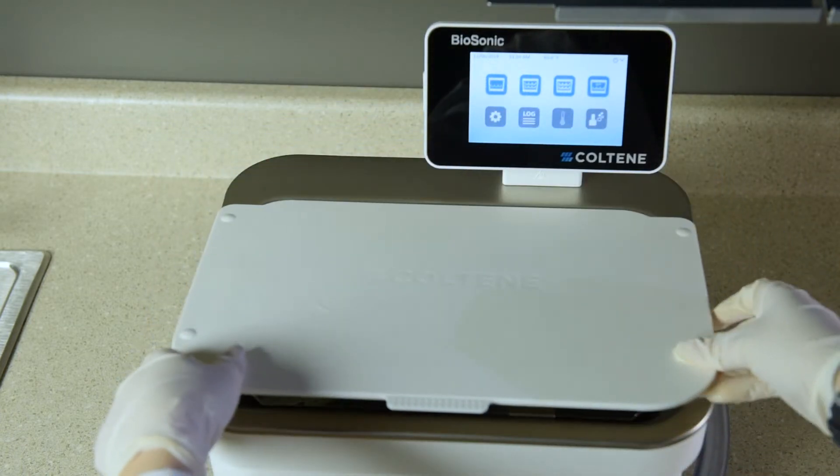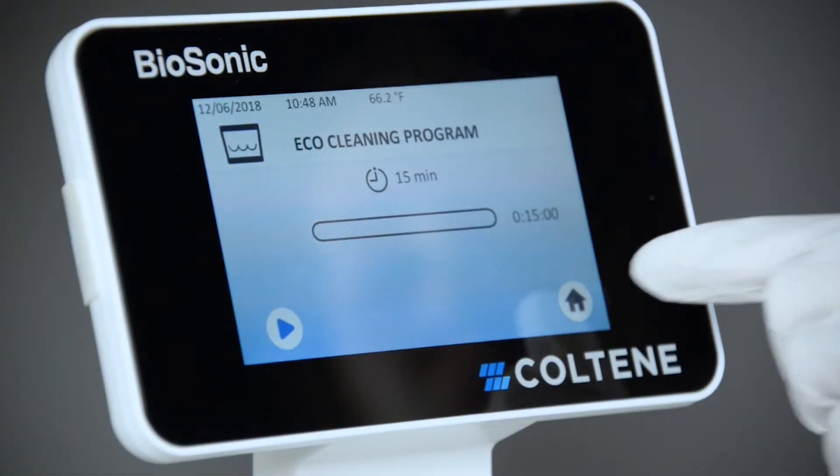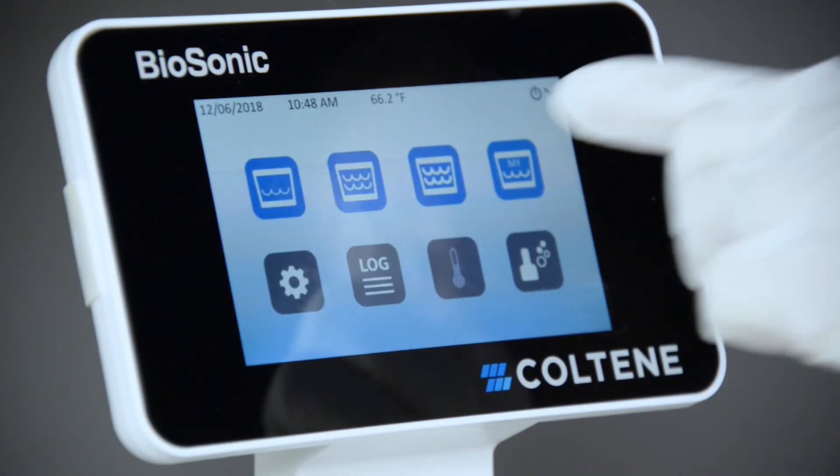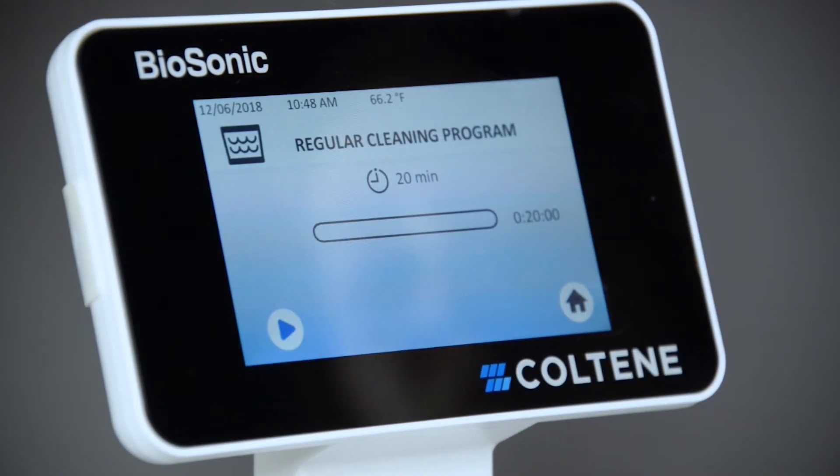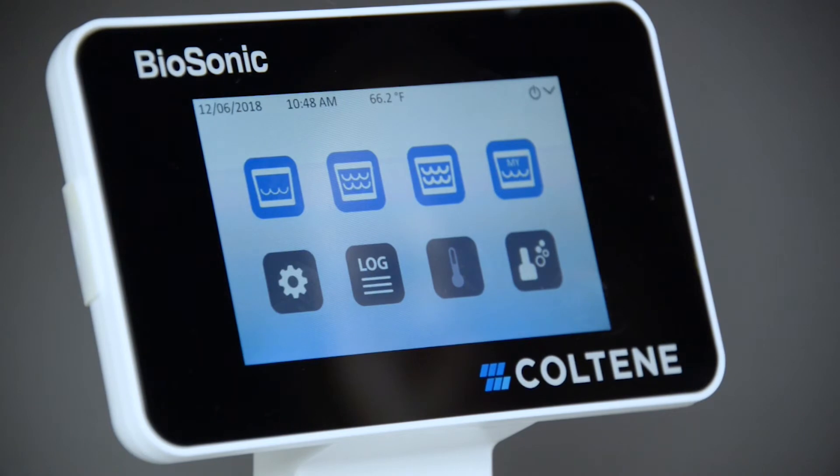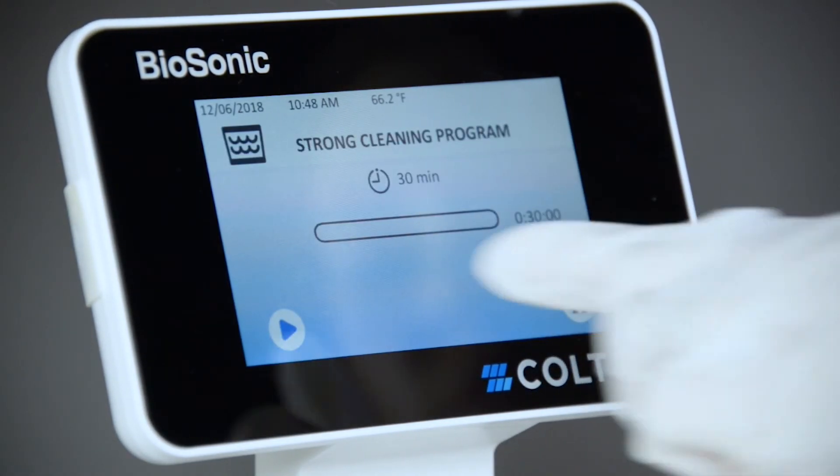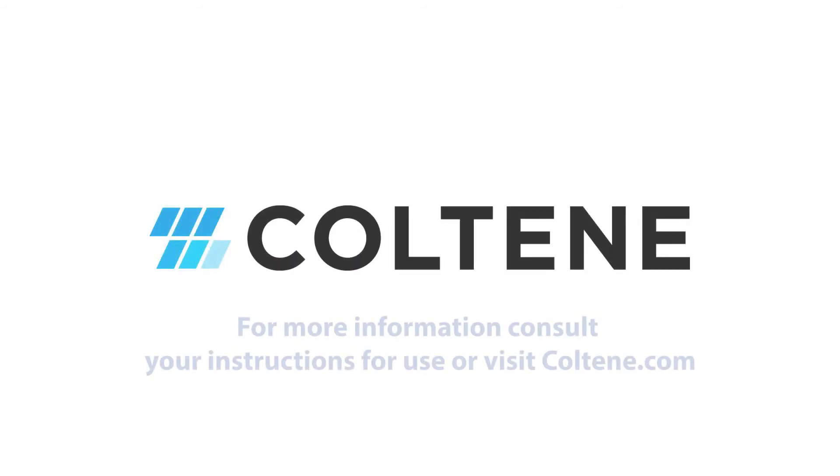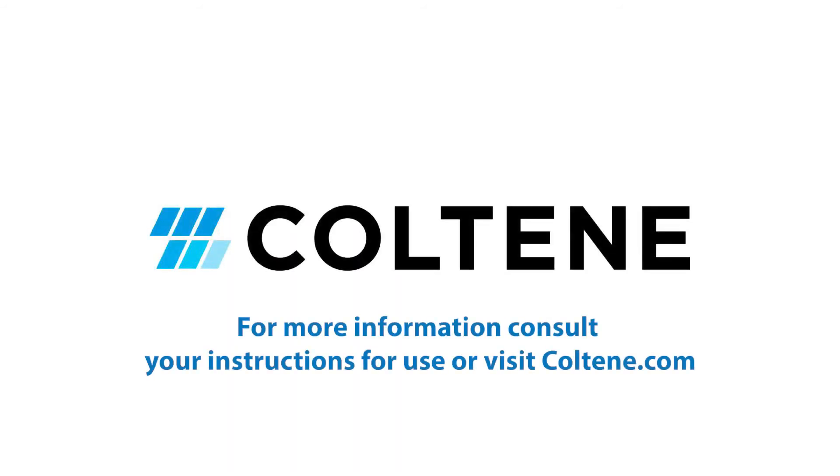If soil is still visible after the completion of a cleaning cycle, modification to one or more parameters may be required, and then additional cleaning cycles may be required until all soil is at a minimum visibly removed. For more information on your UC150, consult your instructions for use or visit coltene.com.